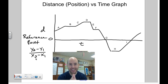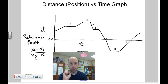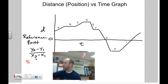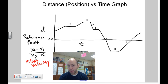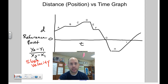So what does the slope mean on a distance versus time graph? This is very important. On a distance versus time graph, or a position versus time graph, slope means velocity. The slope is either going to be positive or negative. If you get a negative velocity, it does not mean you're slowing down. If you get a positive velocity, it does not mean you're speeding up. The positive and negative only tells you the direction you're going.